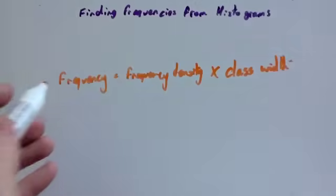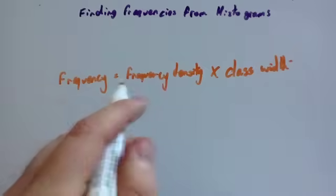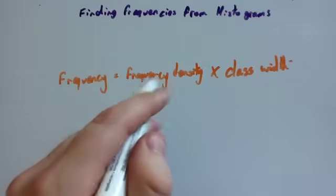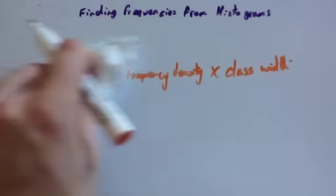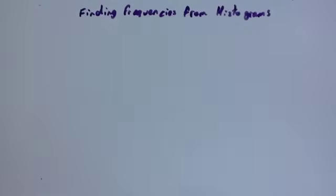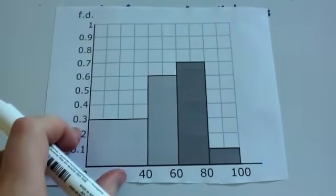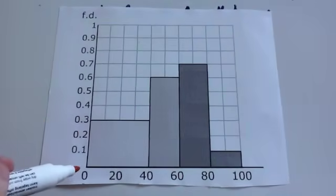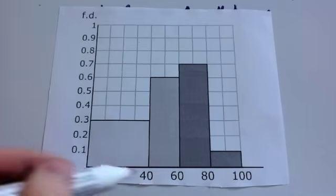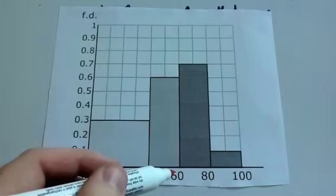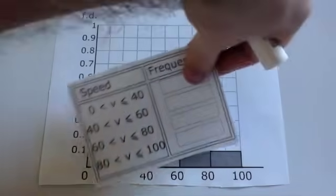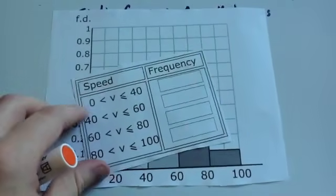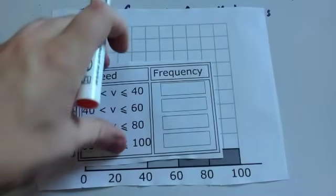Okay, so to find how many people are in a particular bar in a histogram, you multiply the frequency density of that bar by the class width. Okay, so let's look at an example. So here we've got a histogram. You can see that it goes, the intervals are 0 to 40, 40 to 60, 60 to 80, and 80 to 100. I've actually drawn a table, I've printed a table, and here you can see that's the table, that's the intervals.